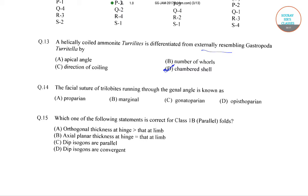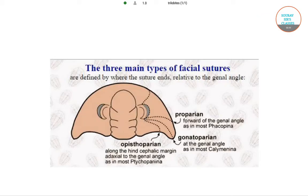Question number 14: the facial suture of trilobites running through the genal angle is known as? Four options are given: proparian, marginal, gonatoparian, and opisthoparian.